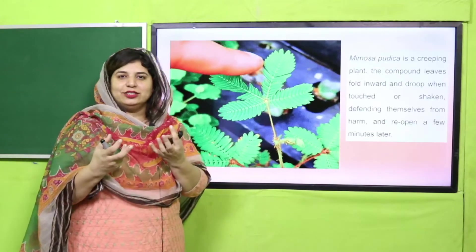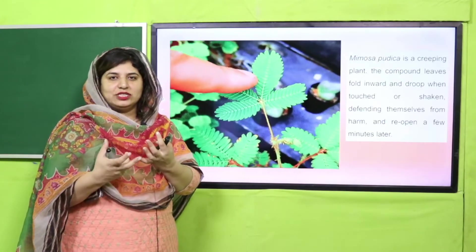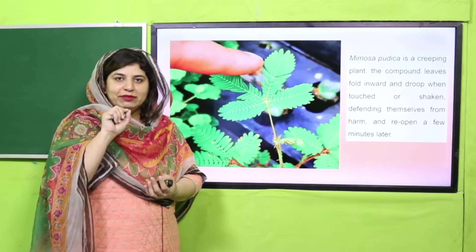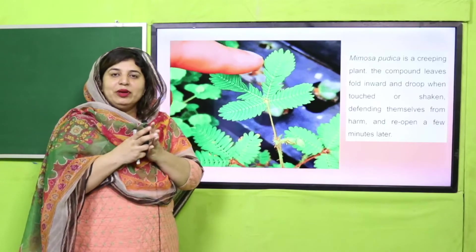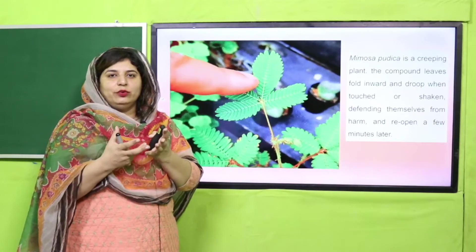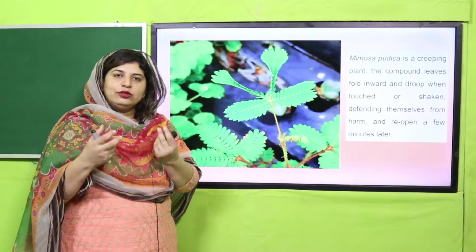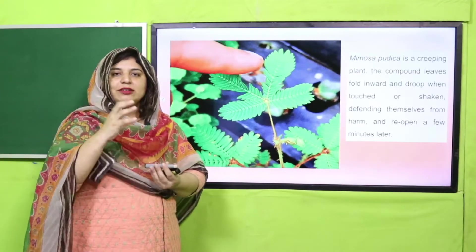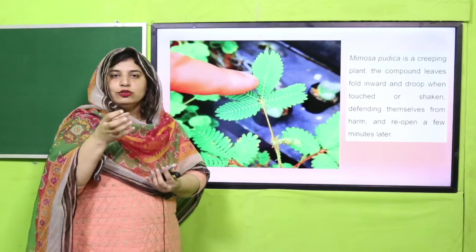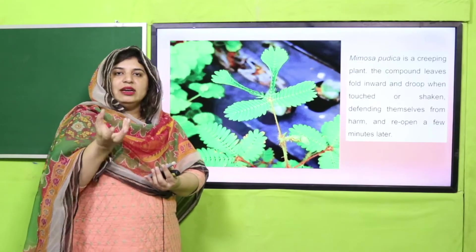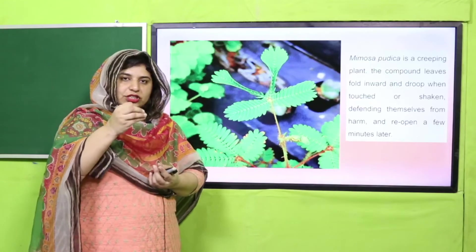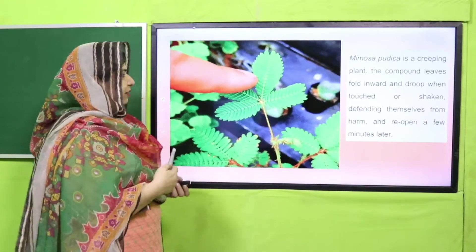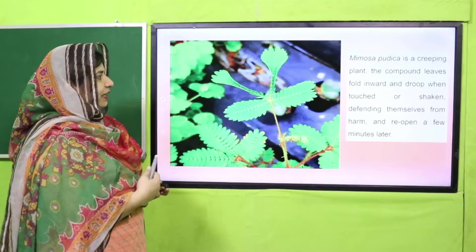Look at this. There is a plant which is called Mimosa, which is commonly called Touch Me Not. If you touch its leaflets, it will start closing its leaflets. Why? Because it is feeling that there is danger around. And when you leave it a little bit, it will reopen. The leaflets get closed because when you touch it, it senses danger. And when you leave it, they will reopen their leaflets. This is what Mimosa does — it feels the touch.